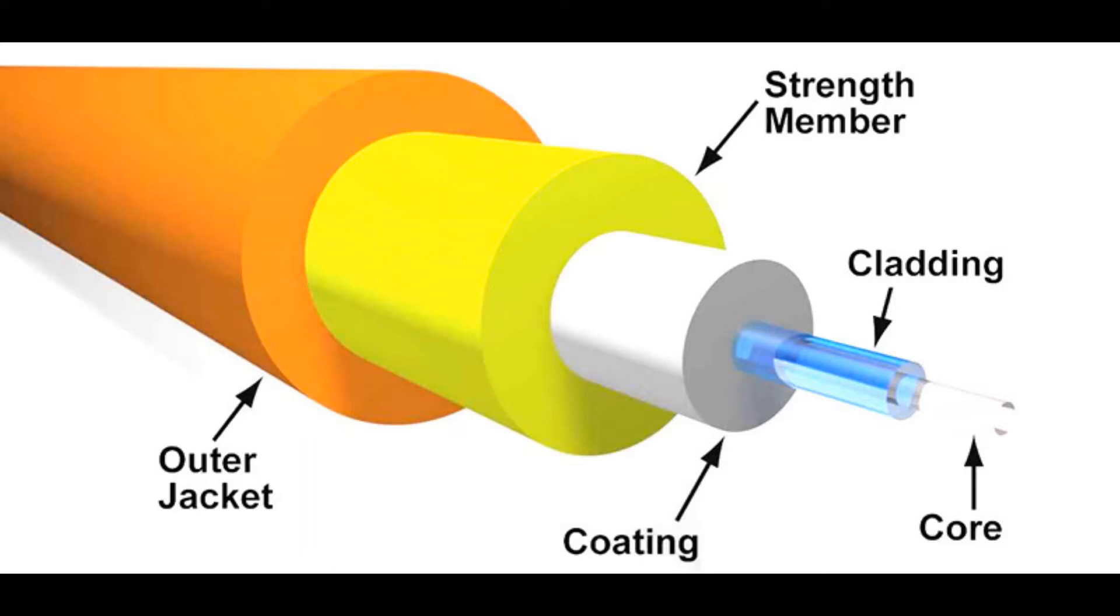Outside of that is the buffer coating, which is usually a plastic material that helps protect the core and cladding from damage and moisture. The last two layers are the strengthening fibers and the cable jacket, which makes sure that the fibers remain strong, flexible, and don't get damaged.